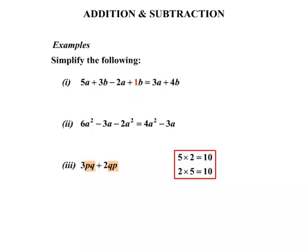And it's the same with pq and qp. It doesn't matter that they're in different orders. They are in fact the same term. So we can add them. 3pq plus 2qp ends up being 5pq.